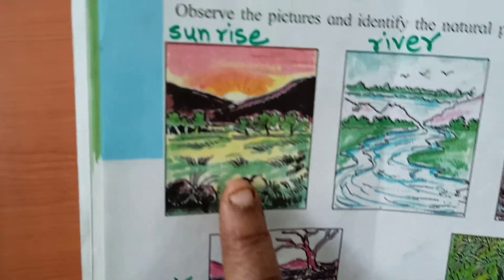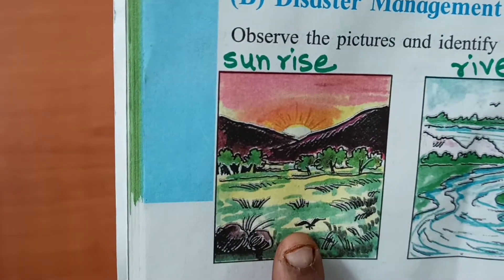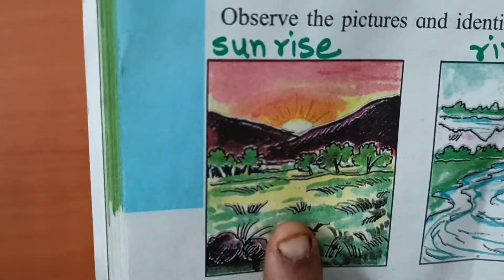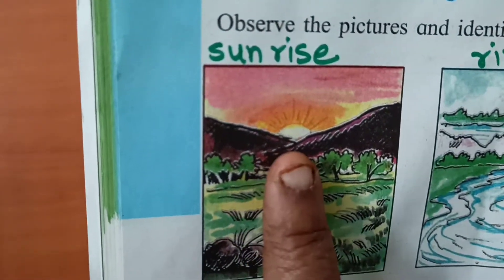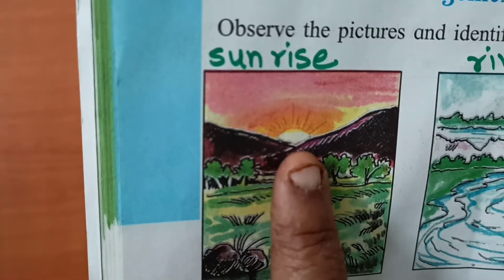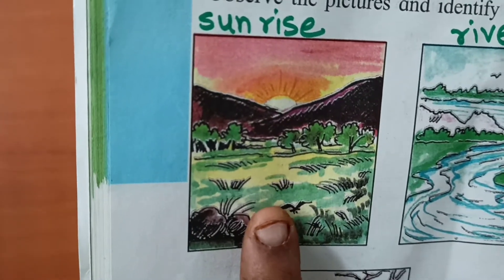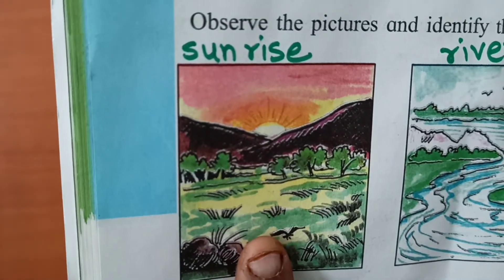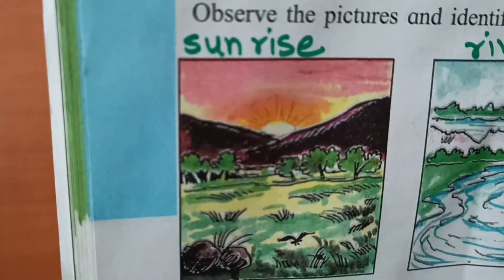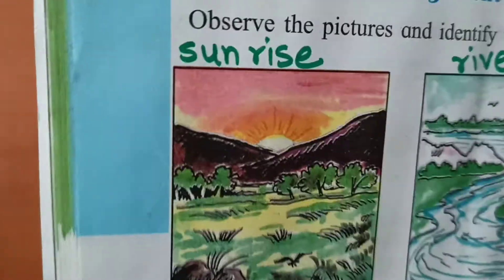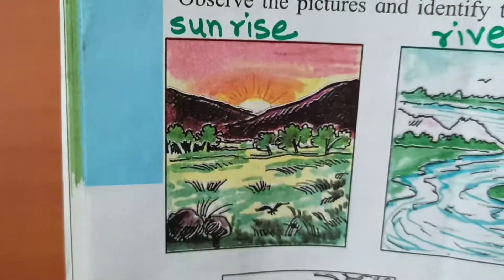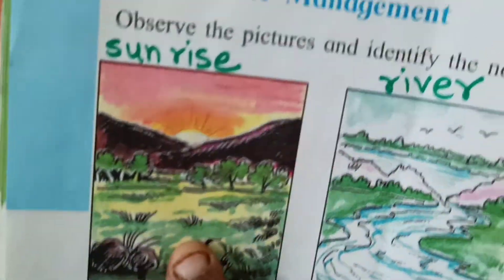Now this is the picture of sunrise. Every morning sun rises in the east. When you see sunrise in a jungle or in a village, it looks very very beautiful. On the beach side also it looks very beautiful.